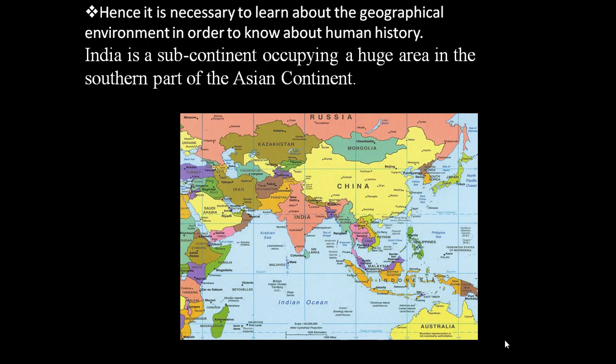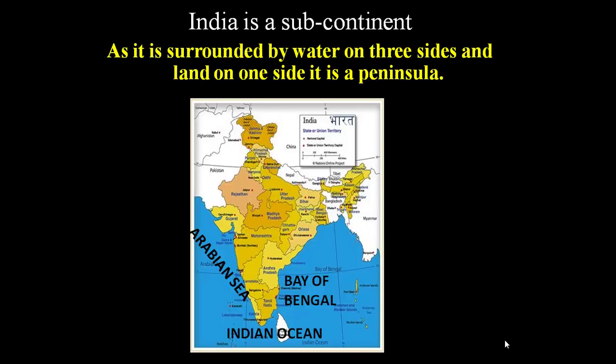India is called a subcontinent because it has certain features that a continent needs, and it is occupying a huge area in the southern part of the Asian continent. As India is a subcontinent, it is surrounded by water on three sides and land on one side — that is the reason India is also called a peninsula.